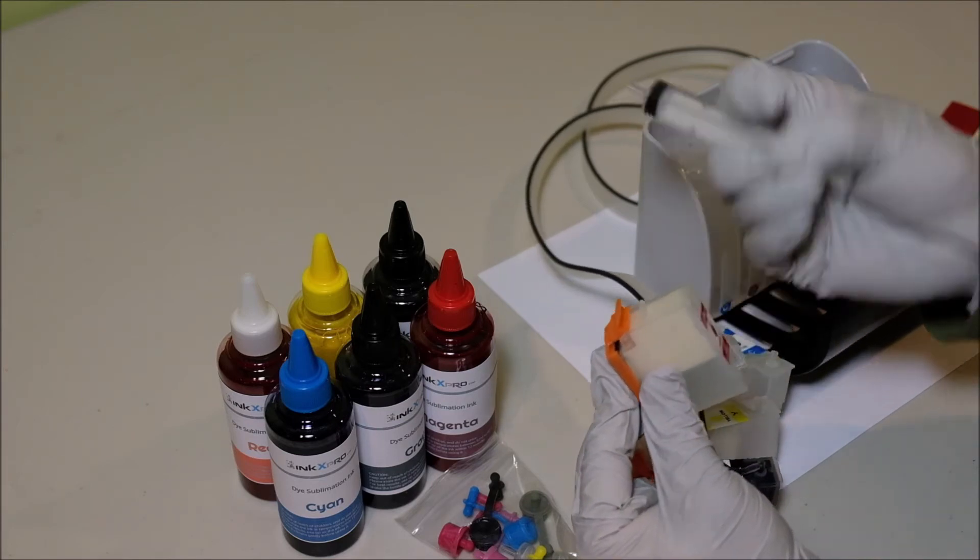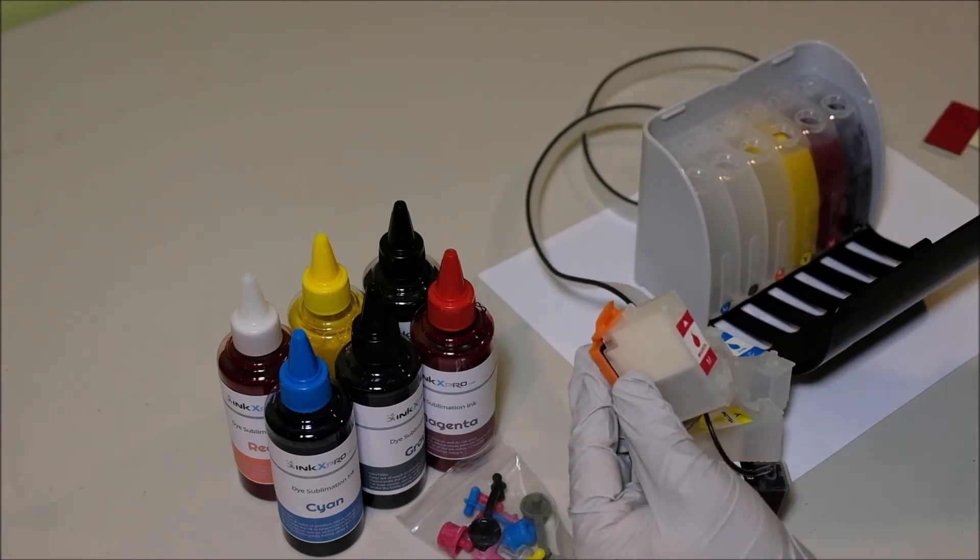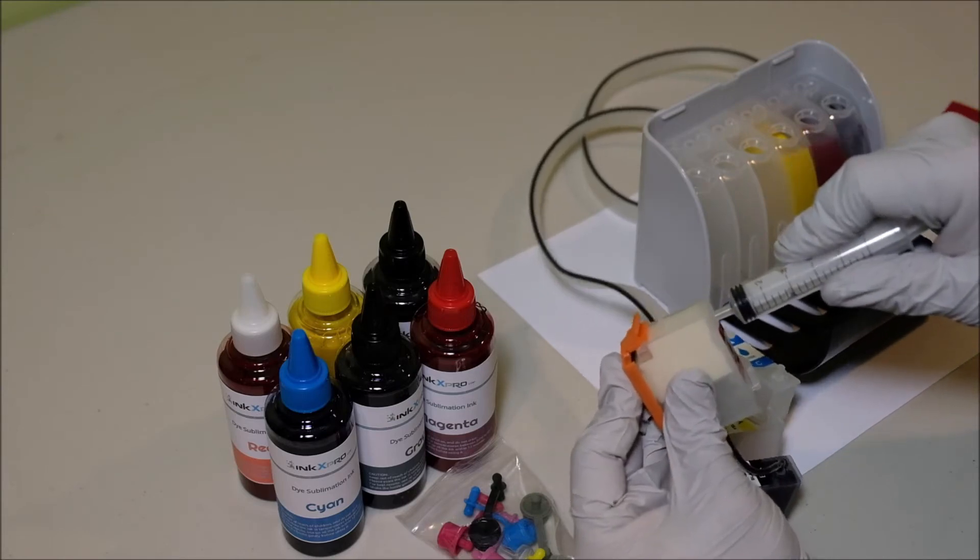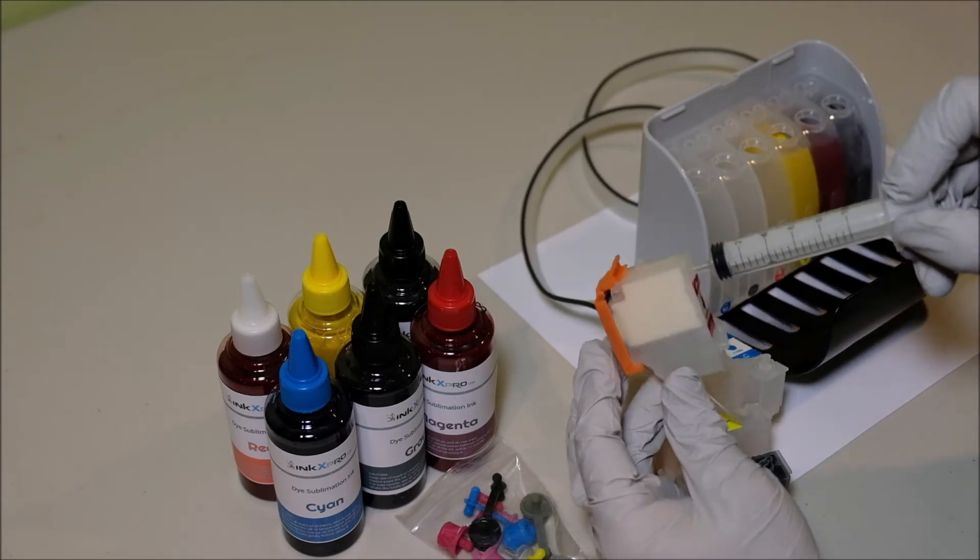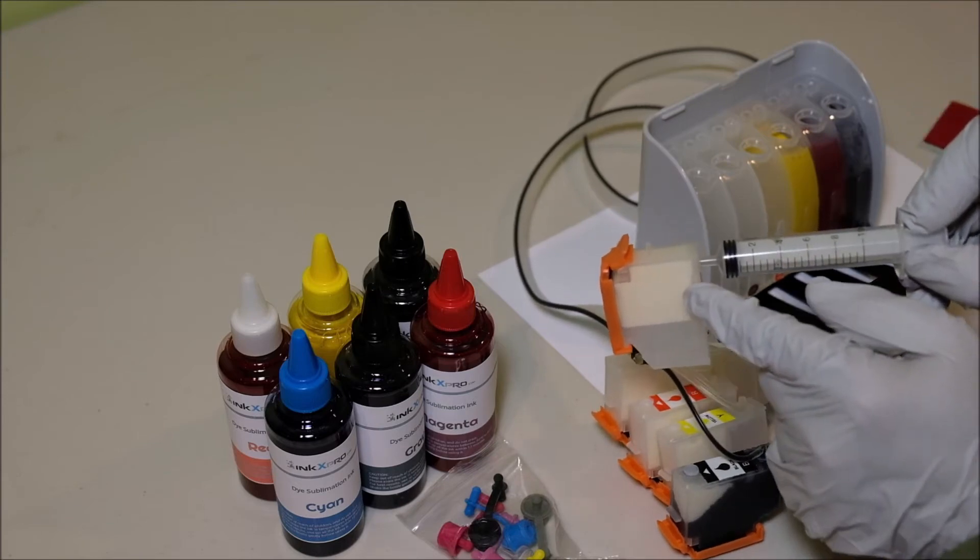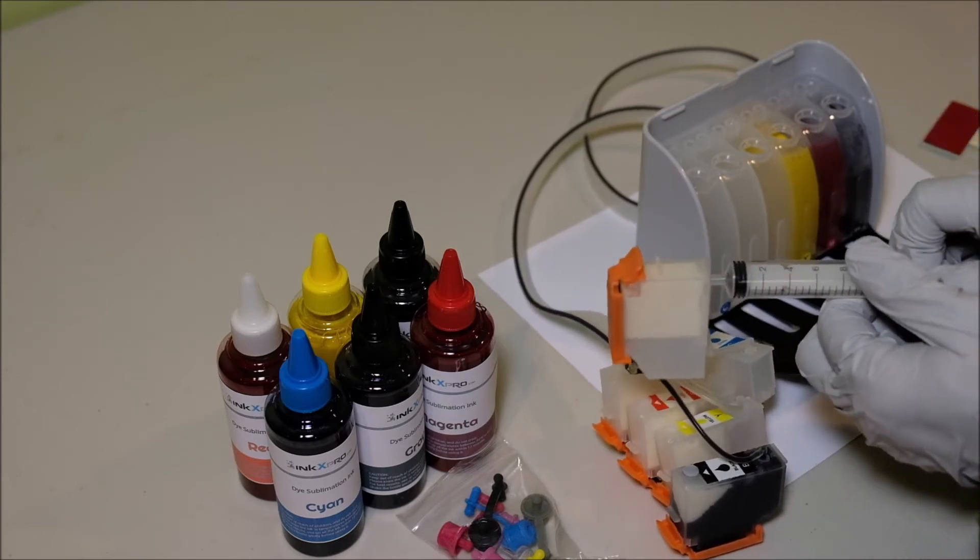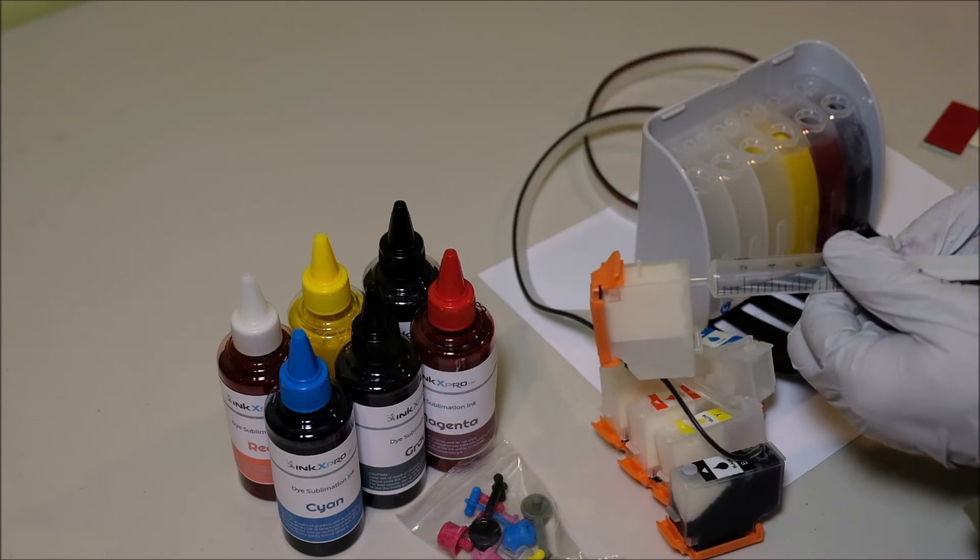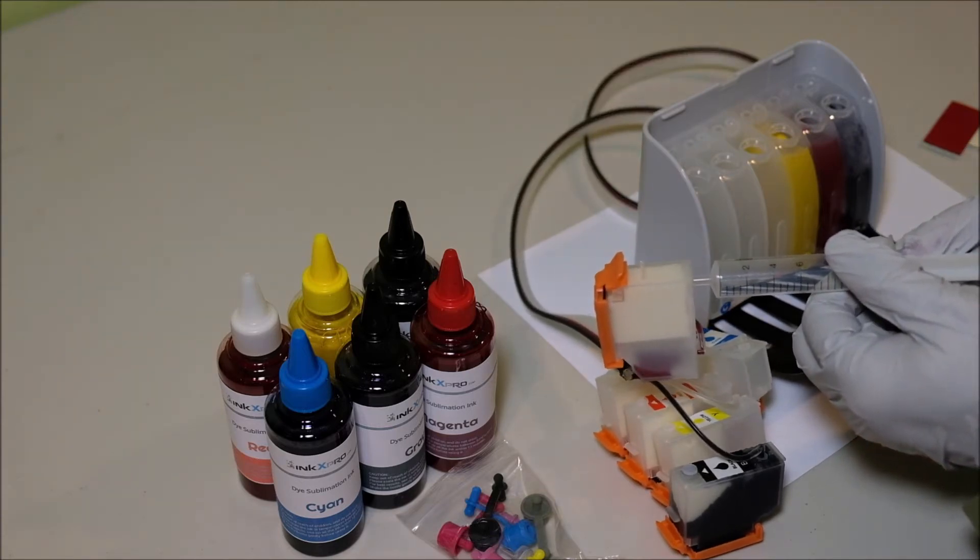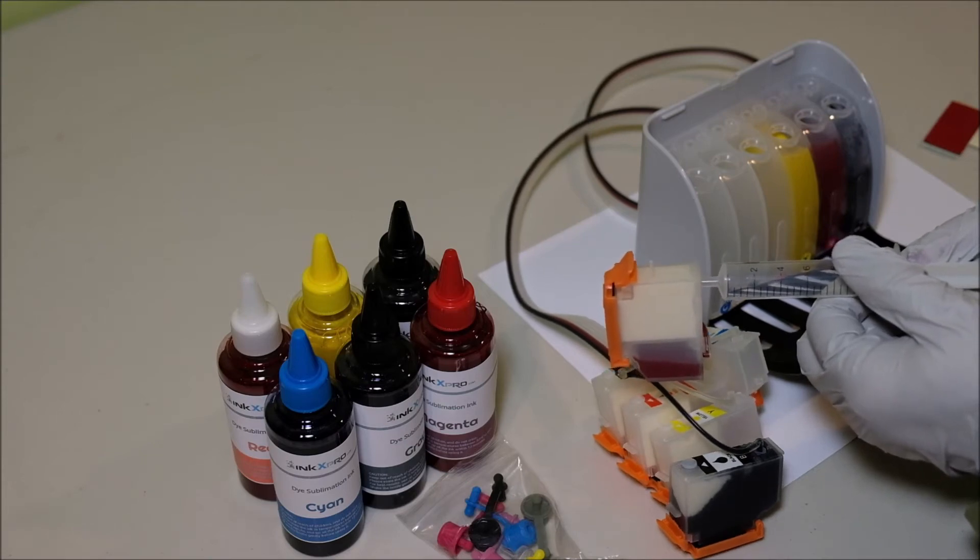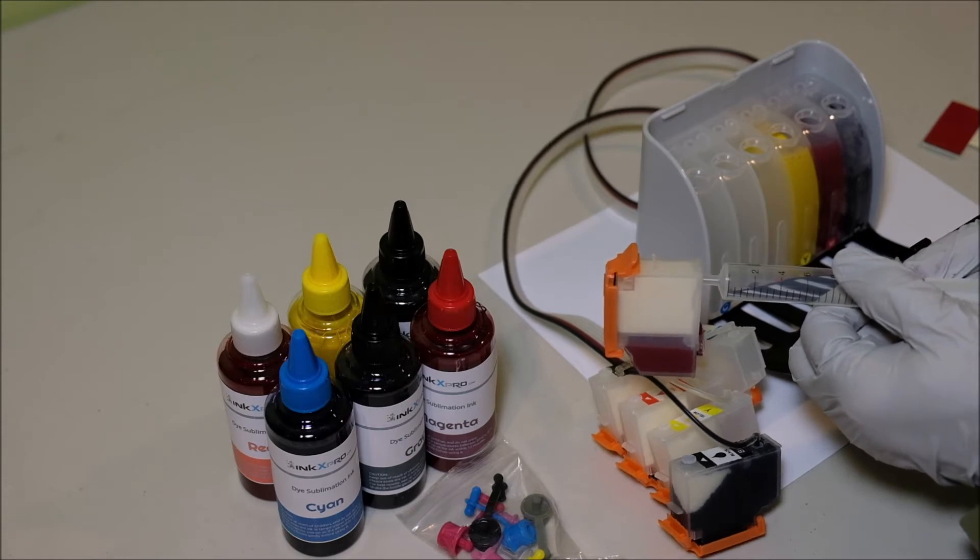Remove the rubber plug and use the syringe, connect to here and have the sponge side on the top. Then you can pull the air out, at the same time you're pulling the ink from the reservoir.